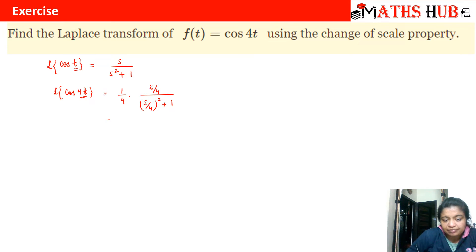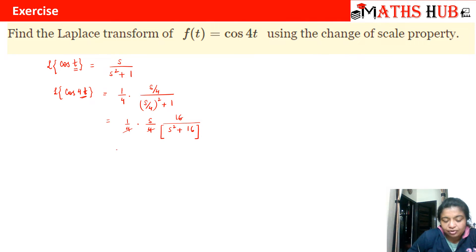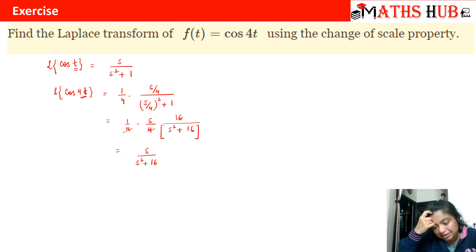Let us solve it a little bit. This is (1/4) · (s/4) / ((s/4)² + 1), which gives us (s/4) in the numerator and s² + 16 in the denominator — the 16 from the denominator comes up. So we get the answer as s/(s² + 16). I hope the change of scale property is clear. Let us do some more questions.